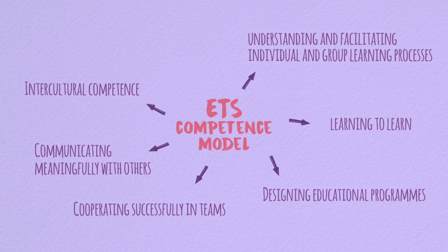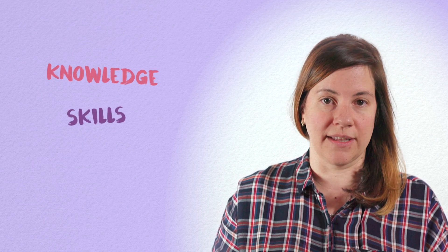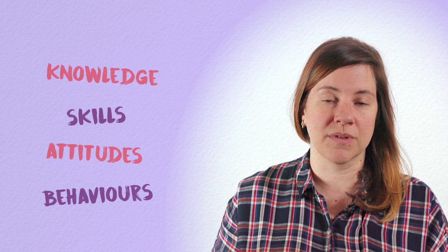The remaining two areas are intercultural competence and being civically engaged. Under these seven competence areas there are 39 competences and even more specific criteria, which include knowledge, skills, attitudes, and behaviors. This does not mean that in order to be a trainer you need to have all of them fully developed — because that would mean that you would be a super trainer, and to our knowledge there isn't one, or at least not yet.